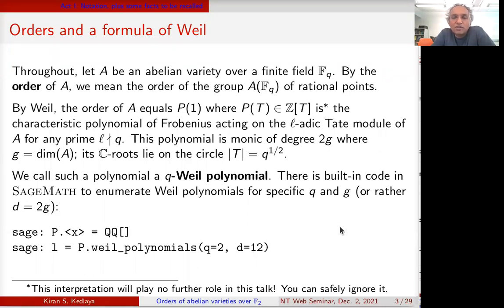There's a polynomial P(T) with integer coefficients such that the order equals P(1). This polynomial is the characteristic polynomial of Frobenius acting on the l-adic Tate module of A for any prime l not dividing q. What you really need to know is that it's monic of degree two times the dimension of the abelian variety, and all of its complex roots have absolute value q^(1/2). Such polynomials are called q-Weil polynomials. This talk is mostly about Weil polynomials — the abelian varieties are motivation but recede fairly quickly.